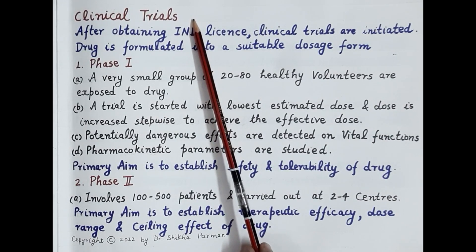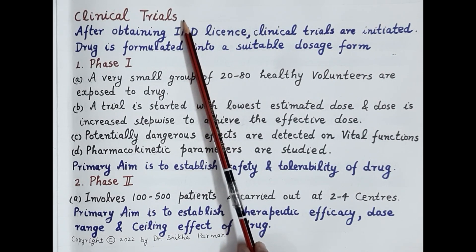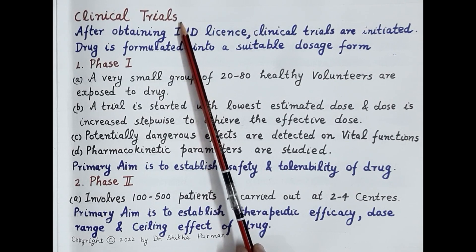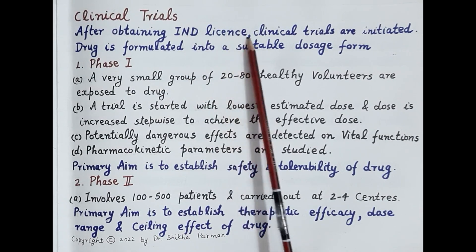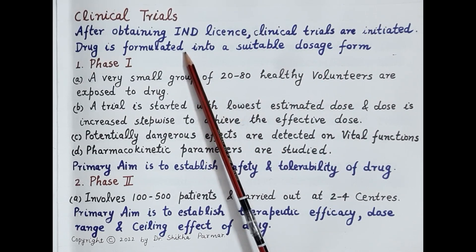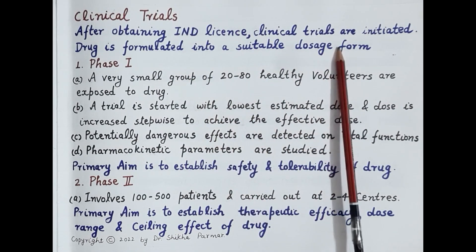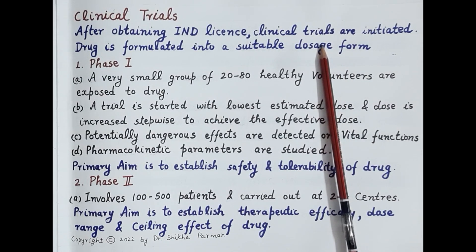After preclinical studies, the next step in new drug development is clinical trials. The five potential drug candidates selected through preclinical screening are further evaluated in clinical trials after obtaining an Investigational New Drug license. The drug candidate is formulated into a suitable dosage form for testing in human beings. Clinical trials are conventionally divided into four phases: Phase 1, Phase 2, Phase 3, and Phase 4.